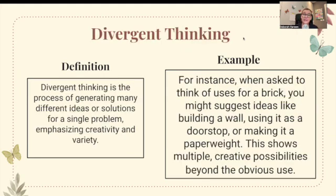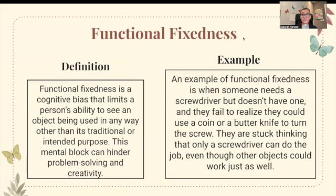Divergent thinking is the process of generating many different ideas or solutions for a single problem, emphasizing creativity and variety. For instance, when asked to think of uses for a brick, you might suggest building a wall, using it as a doorstop, or making it a paperweight — showing multiple creative possibilities. Functional fixedness is a cognitive bias that limits a person's ability to see an object used in any way other than its traditional purpose. For example, needing a screwdriver but failing to realize a coin or knife could turn the screw.